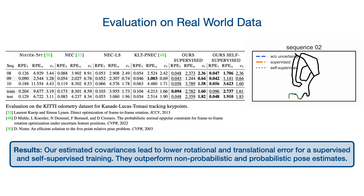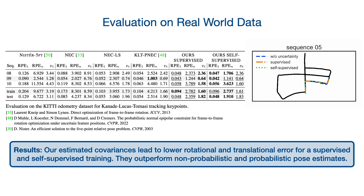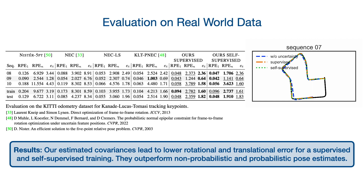Networks trained in a supervised and self-supervised manner both outperform the other pose estimation techniques regarding rotation and translation estimation. The learned covariances generalize well to unseen data in the test split of the KITTI odometry dataset, as seen in qualitative trajectories as well as quantitative metrics. They not only consistently perform better than non-probabilistic methods but also probabilistic ones. This indicates that our learned covariances more accurately model the keypoint uncertainty distribution than previous methods. Our framework also allows us to estimate uncertainty for keypoint detectors not covered by literature, such as SuperPoint.